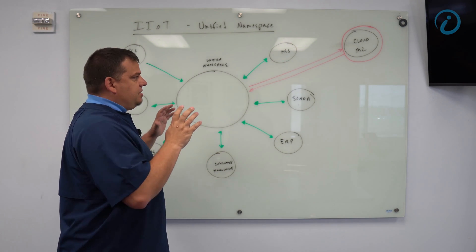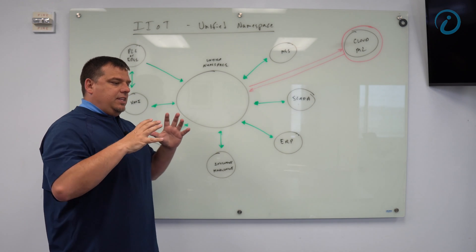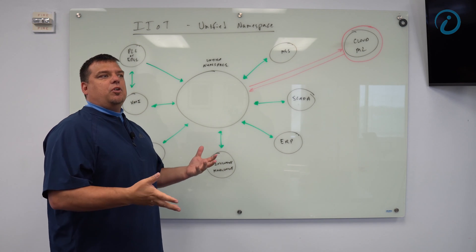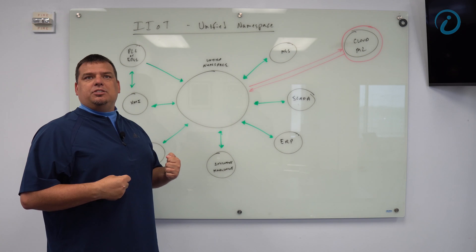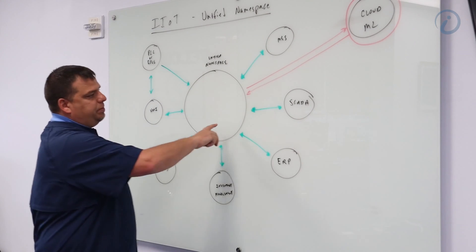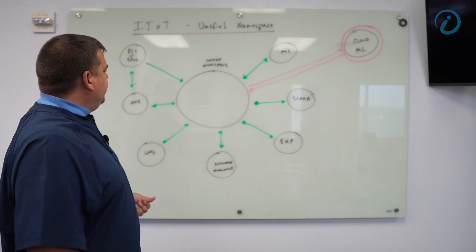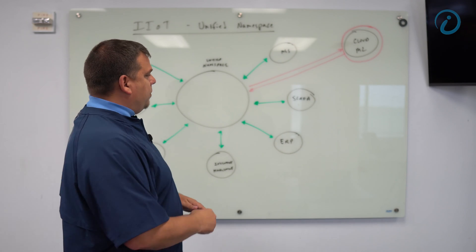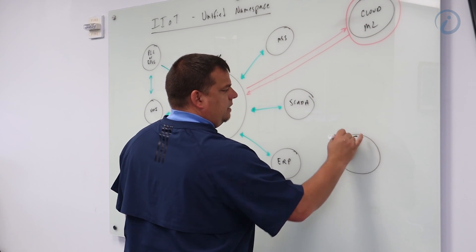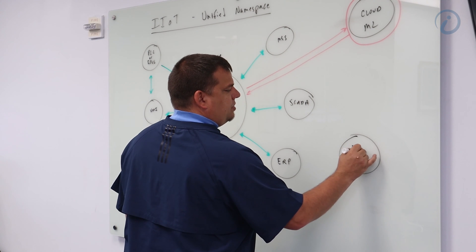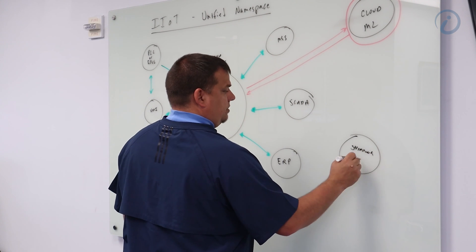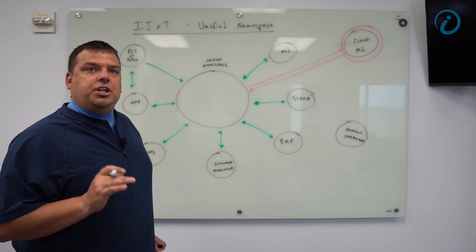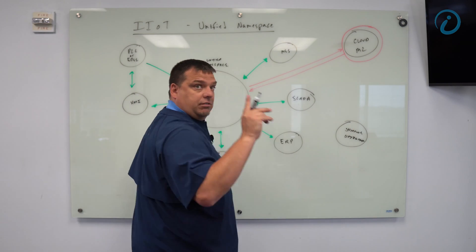The Unified Namespace is the structure of all our business data in one place. It is literally all data for our entire business in one place for all applications to consume from. So if I wanted to add a new piece of software later on down the road — let's say shipping optimization software — a new piece of software comes out that needs information.